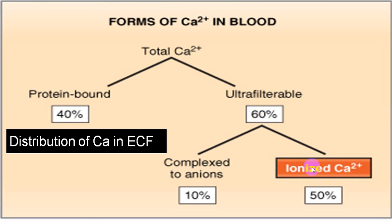Of the filterable fraction, ionized calcium is 50% and 10% is complex anions. So if you add protein bound and complex anions, this becomes 50%, and ionized is 50%. Of whatever calcium is present in blood, 50% is ionized.